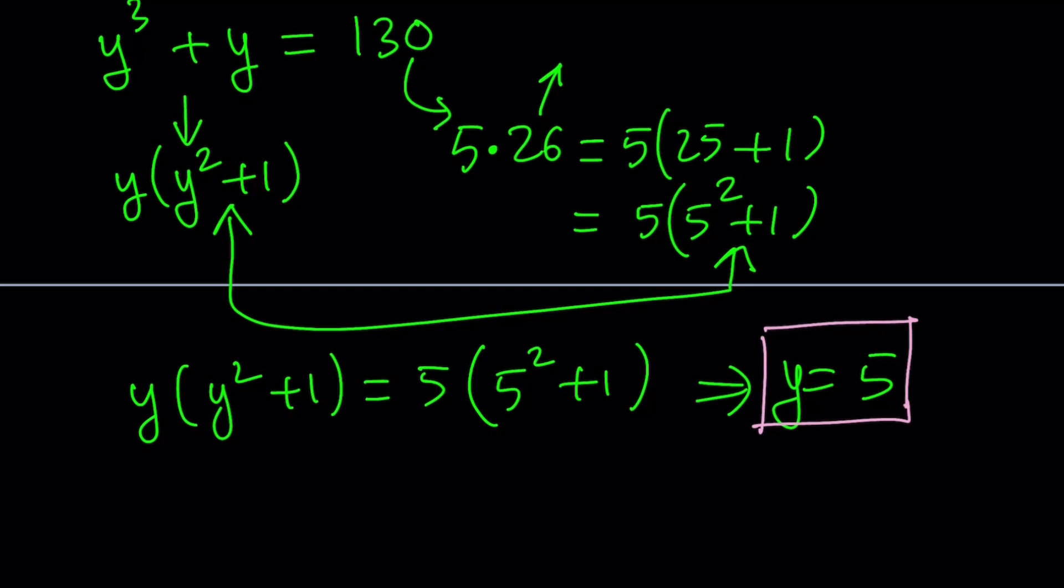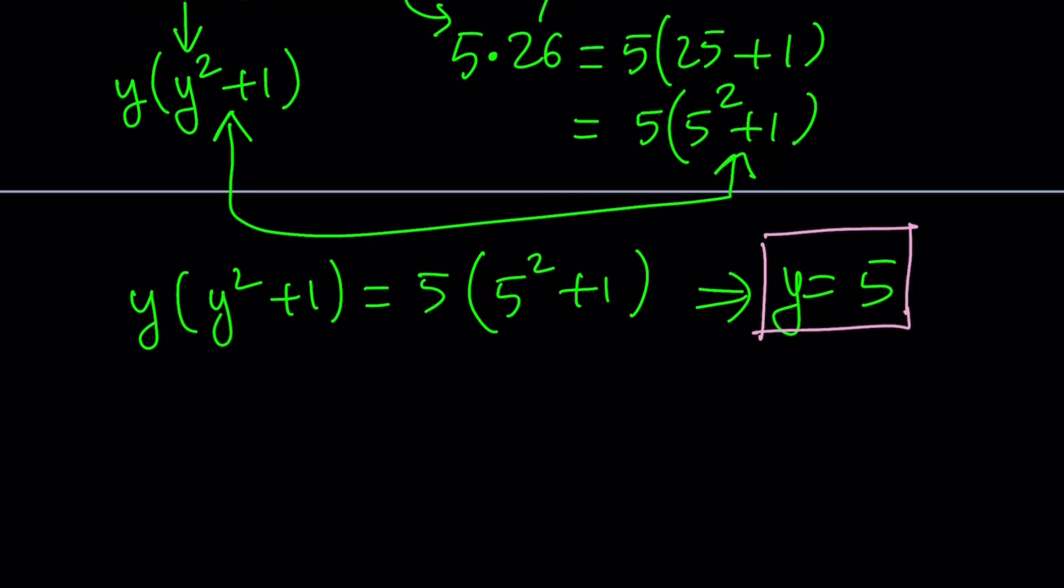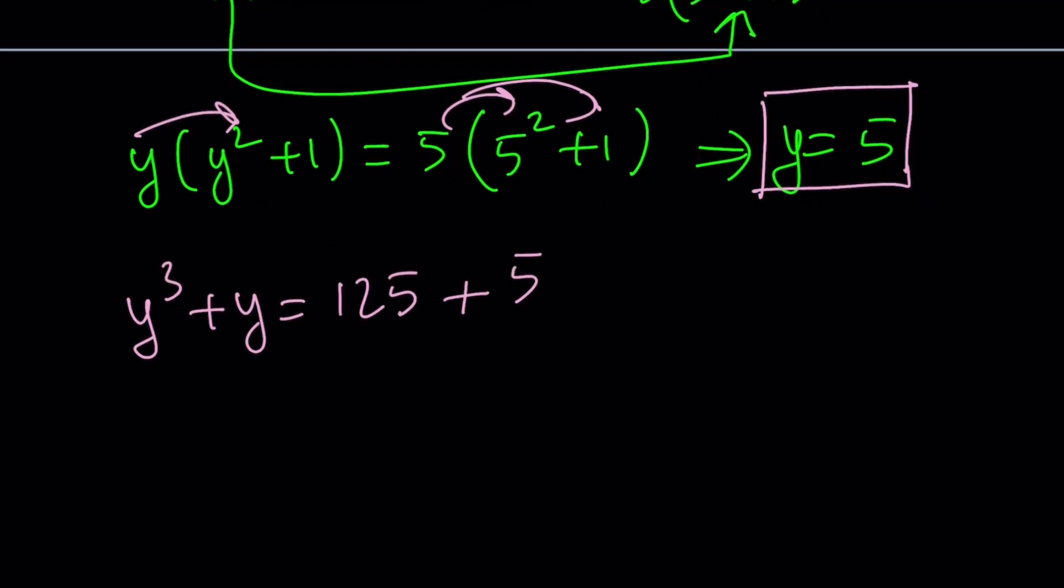You can do polynomial division or manipulate the expression or long division or short division. But let's go ahead and do the following. Let's distribute y cubed plus y. And same thing here. We're going to get 5 cubed, which can be written as 125 and 5 times 1 equals 5. Obviously, we could do this at the beginning, but it's not always easy to see that y cubed plus y can be written as 125 plus 5, because there's more than one way to do it.